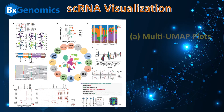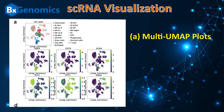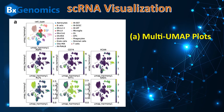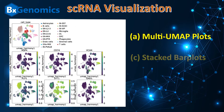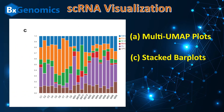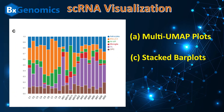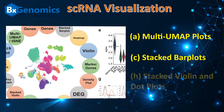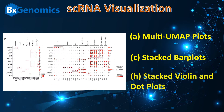Just to name a few: multi-UMAP plots highlight cells with cell type markers; stacked bar plots demonstrate the fraction of each cell type across samples; and stacked violin and dot plots are the key visualizations of selected cell markers across cell types.